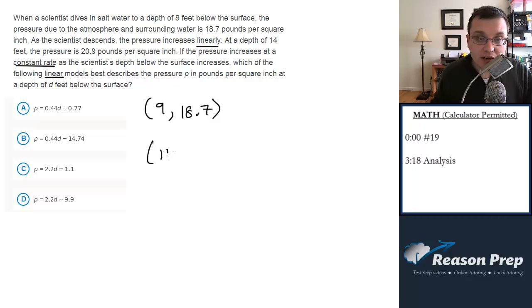Then at 14 feet, it's 20.9 pounds. We can come up with two points here, two coordinate points, just as we would in a typical line question. Now, we just find the equation of the line, and the first thing we'll do is find the slope.